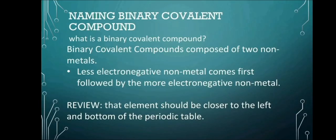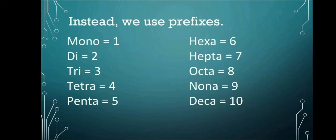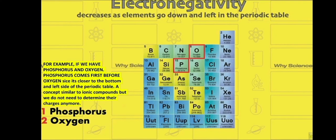How about naming binary covalent compounds? First, let us know what is a binary covalent compound. Binary covalent compounds are composed of 2 non-metals. Less electronegative non-metal comes first, followed by the more electronegative non-metal. If you can remember our previous lesson, we learned that periodic trends, the less electronegative elements should be closer to the left and bottom of the periodic table. For example, if we have phosphorus and oxygen, phosphorus should come first since it is closer to the bottom and left side of the periodic table. The concept is pretty similar with ionic compounds, but we do not determine the charges anymore.